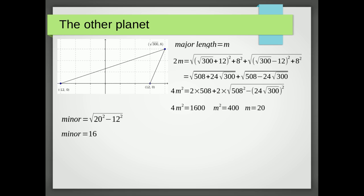So just using Pythagoras again, we get the minor is 16. So now we've got our a and b, we've got our 16 and 20, and we're going to get the equation of the outer planet to be x²/400 + y²/256 = 1.